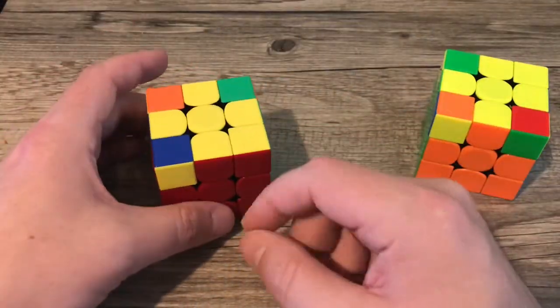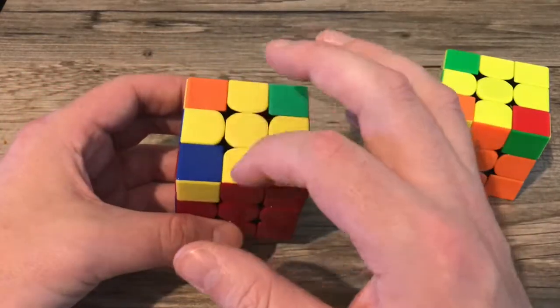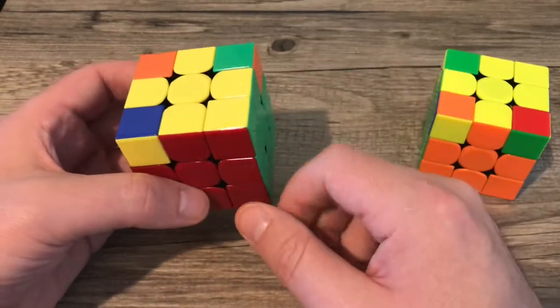Hey guys, welcome back. What we've done so far is we've gotten the first two layers done and we have this yellow cross on top that's oriented.